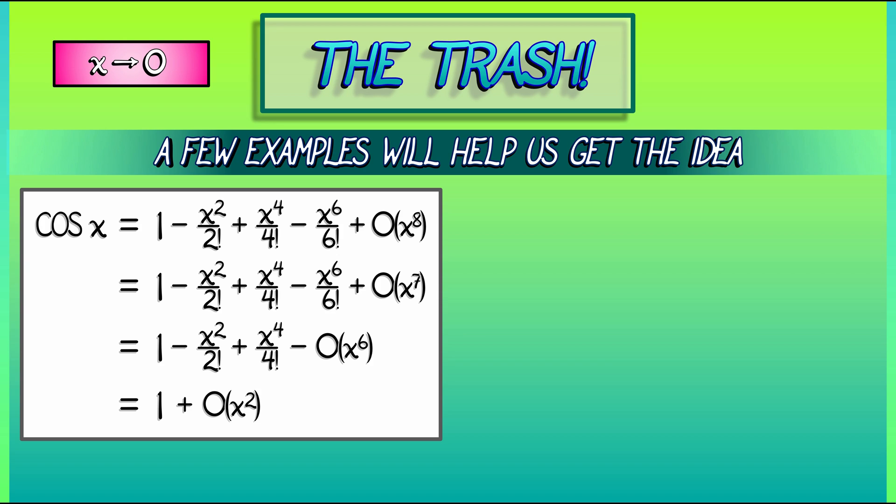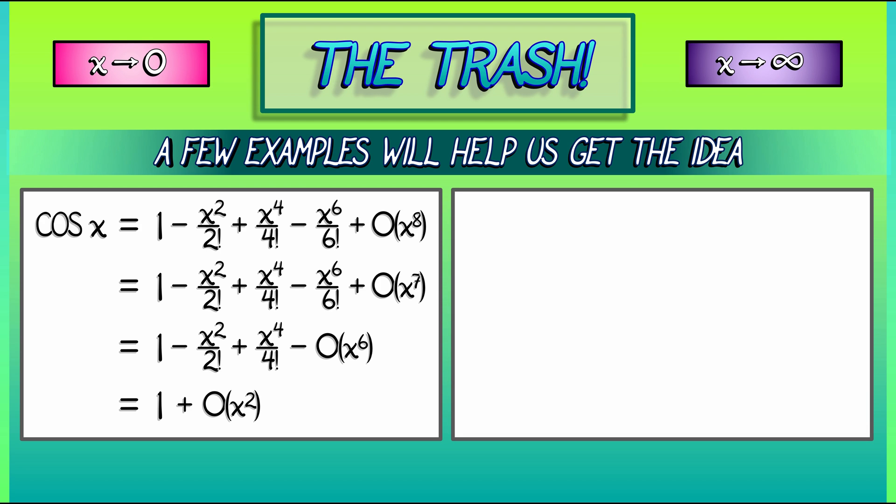Now, that's an example where x is really small, but we can also consider the case where x is really big and going to infinity. Consider the function log of quantity 1 plus 1 over x. As x gets really, really large, that 1 over x is very small. We recall the Taylor series for log of 1 plus smiley, right? That's smiley minus smiley squared over 2 plus smiley cubed over 3. Well, plugging in 1 over x gives us 1 over x minus 1 over 2x squared plus 1 over 3x cubed